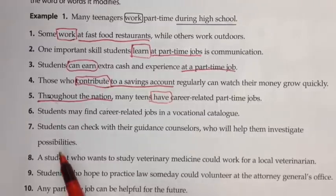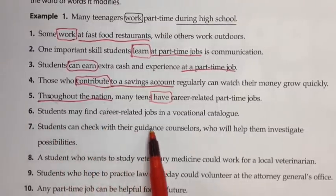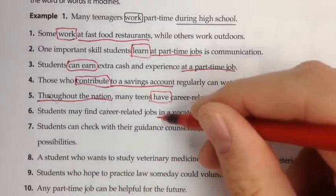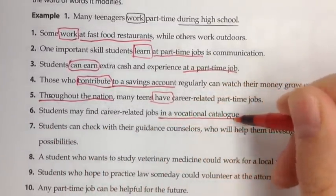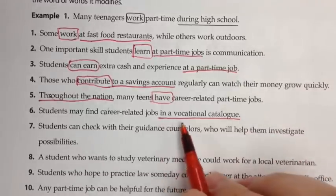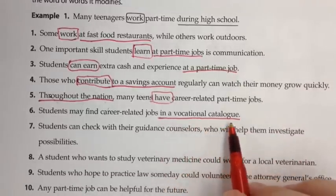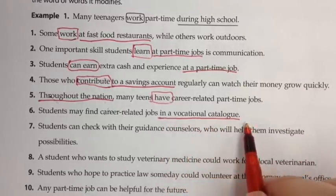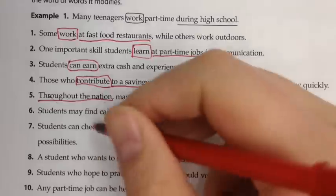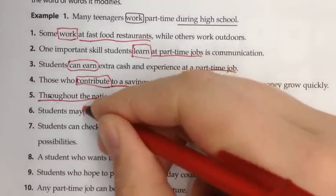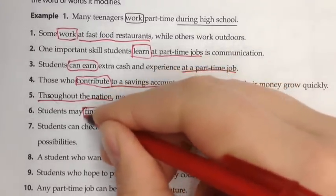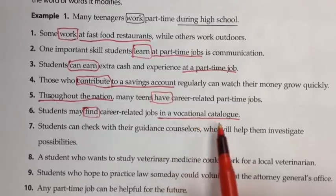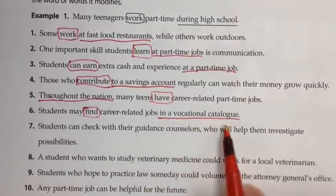Number six: students may find career-related jobs in a vocational catalog. 'In' is our preposition, here's our object of that preposition, and this tells us where they can find. Where can they find career-related jobs? In a vocational catalog.